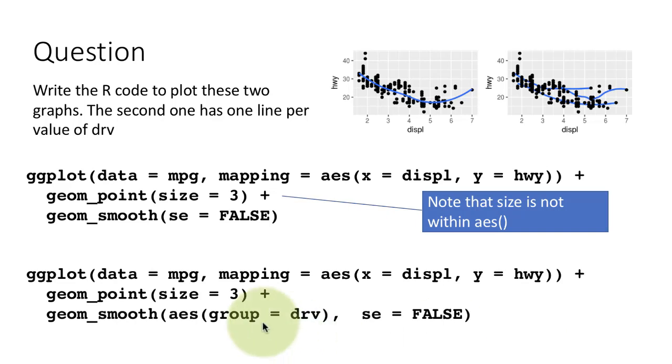Group equals drive, because that is what is going to divide the data into three sets and make it plot one line per set. So again, this slide is important because it's showing you that when you do grouping or any other kind of divisions, then you would get multiple lines for the smooth aesthetic.